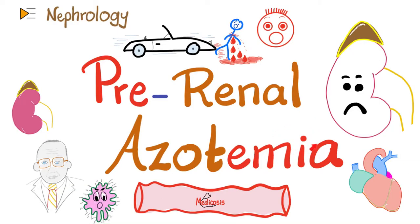Hey guys, it's Medicosis Perfectionatus, where medicine makes perfect sense. Let's continue our nephrology playlist. In the last video we started talking about acute kidney injury or acute renal failure. In the blood there is uremia, azotemia, hyperkalemia, and anemia. In the urine there is hypovolemia, and the glomerular filtration rate is toast.